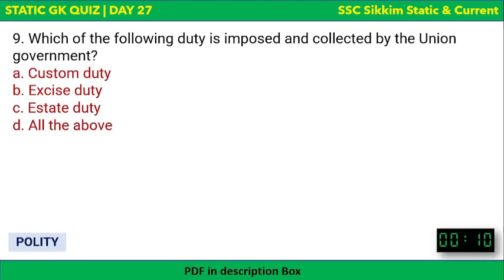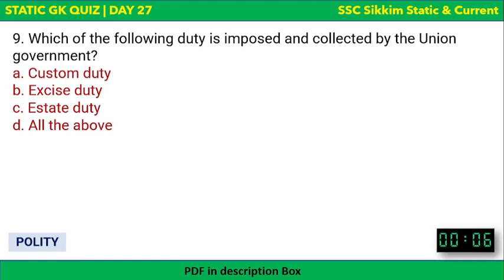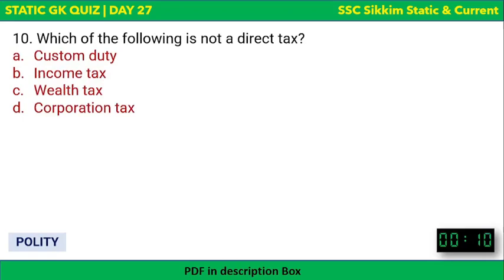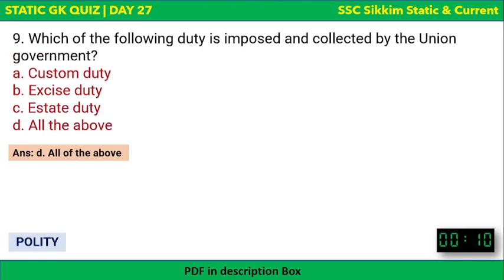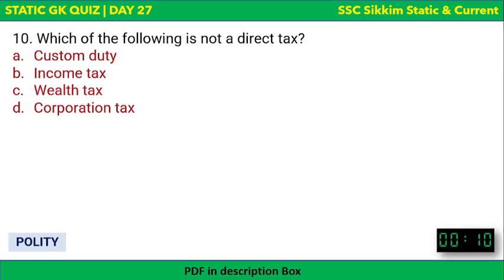Next: Which duties are imposed and collected by the union government? Options are custom duty, excise duty, estate duty, or all of the above. The correct answer is all of the above — custom duty, excise duty, and estate duty are all taxes imposed and collected by the union government.